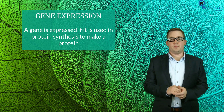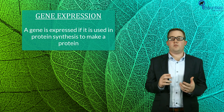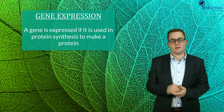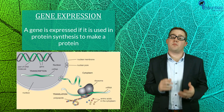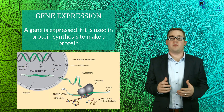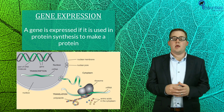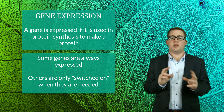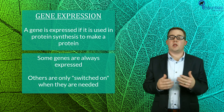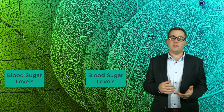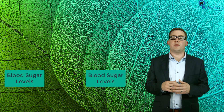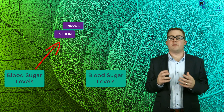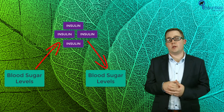Let's start with gene expression. The word gene expression refers to a process by which information from a gene is used in the synthesis of a functional gene product. In other words, a gene can be said to be expressed if it is used in the process of protein synthesis to make a protein. Some genes are expressed continuously, whereas others are only switched on or expressed at particular times, like when particular proteins are acquired. A good example of this is the hormone insulin, which is involved in the control of blood sugar levels. When your blood sugar levels get too high, the rate of expression of the gene for insulin will be increased to help lower the blood sugar levels.